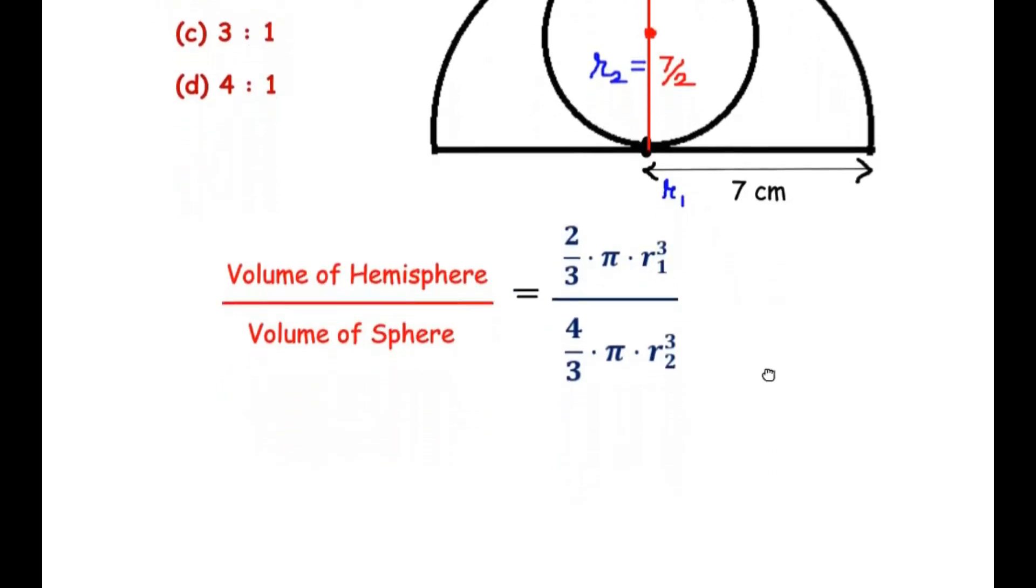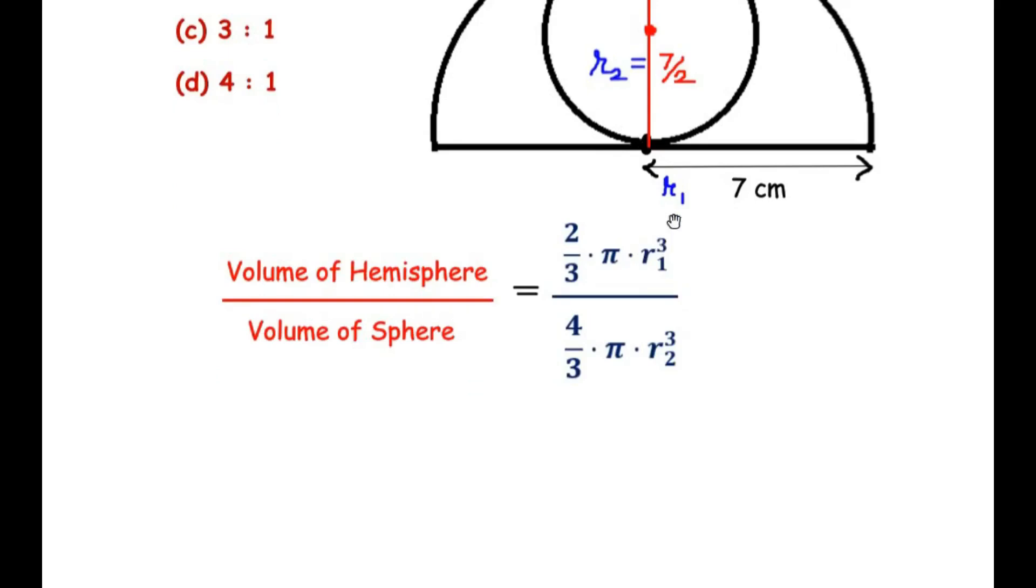Now we simply have to simplify the given terms and substitute the values of R₁ and R₂. Let us start by simplifying: π and π from numerator and denominator cancel, and we can divide 3 and 3. Now we are left with 2 times R₁³. Since R₁ is 7, we write it as 7³ over 4 times R₂³. R₂ is 7/2, so we have (7/2)³.